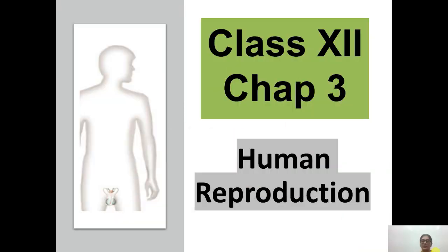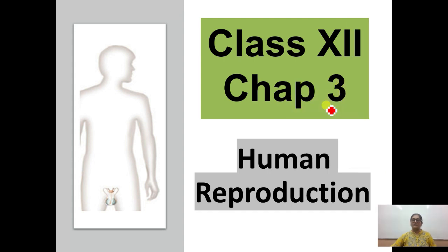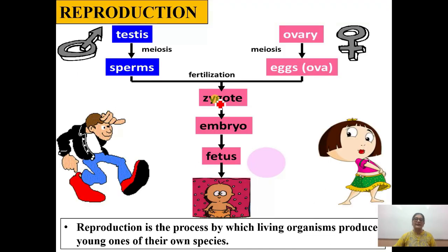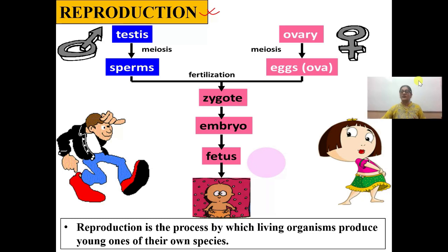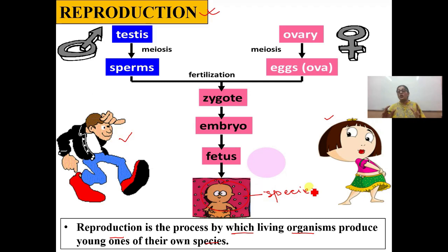Today I am going to teach you Class 12, Chapter 3, that is Human Reproduction. So without wasting much time, let us move into the chapter. Human reproduction — pehle se first, let us look at the term reproduction. Reproduction is the process by which young ones are born similar to the parent. It is a process by which organisms produce young ones of their own species.